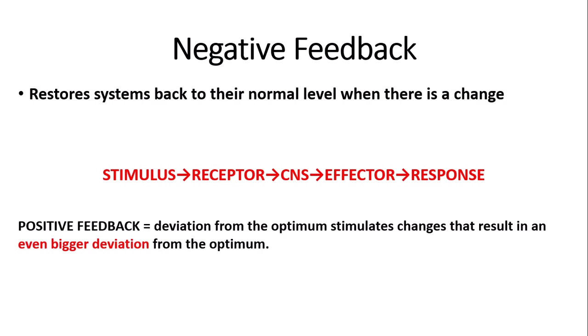You can also get positive feedback, which is the opposite of negative feedback. Deviation from the optimum stimulates a change that results in an even bigger deviation from the optimum. A good example is contractions during labour: when contractions occur as the stimulus, this causes the release of oxytocin as the response. The release of oxytocin causes even more contractions — this is positive feedback, as the deviation from the optimum stimulates a change resulting in an even bigger deviation.